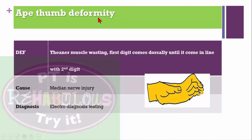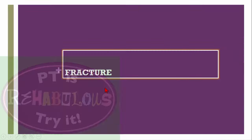Ape hand deformity: there is thenar muscle wasting and the first digit comes dorsally until it is in line with the second digit. Most commonly involved in median nerve injury. Diagnosis procedure is electrodiagnostic testing.